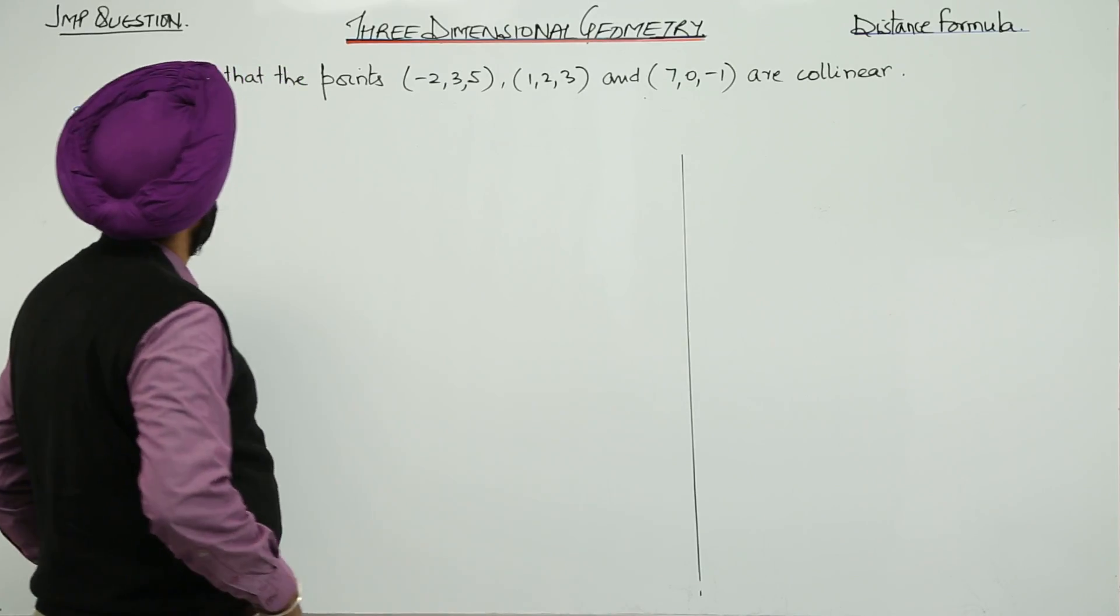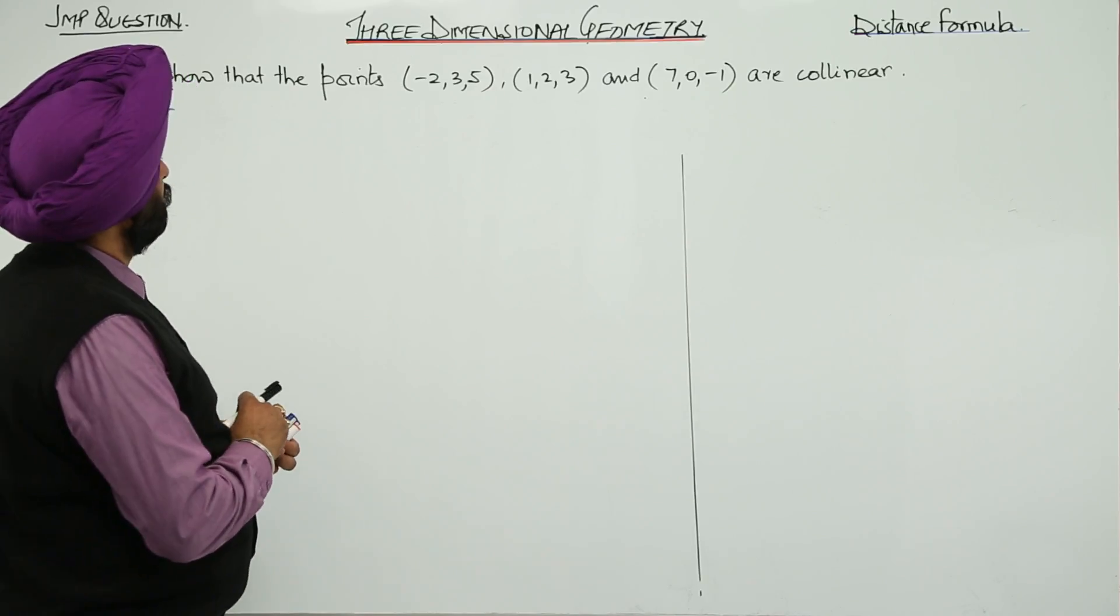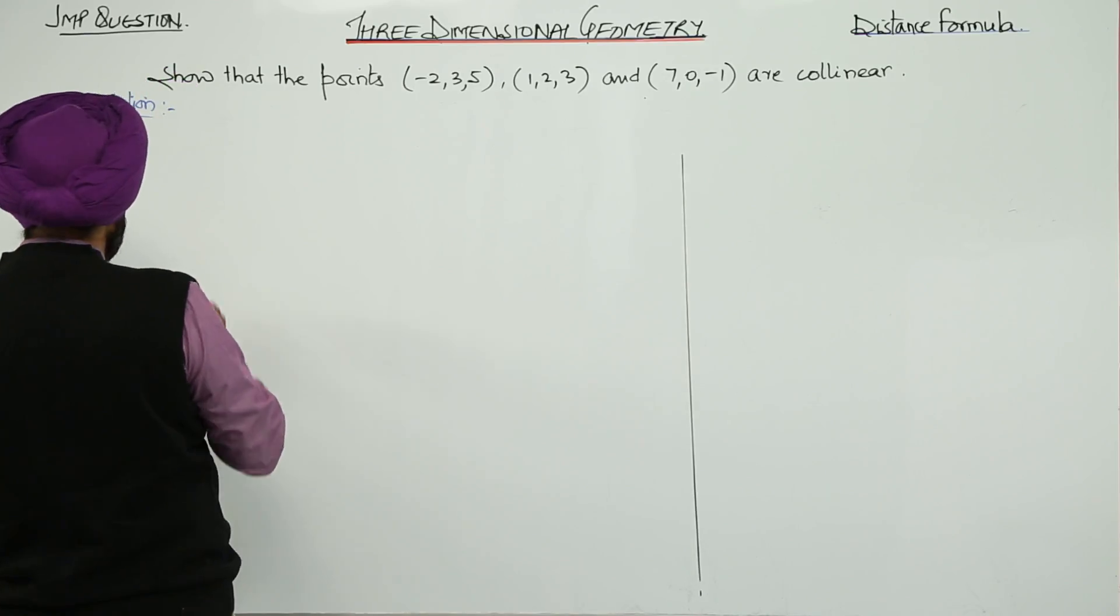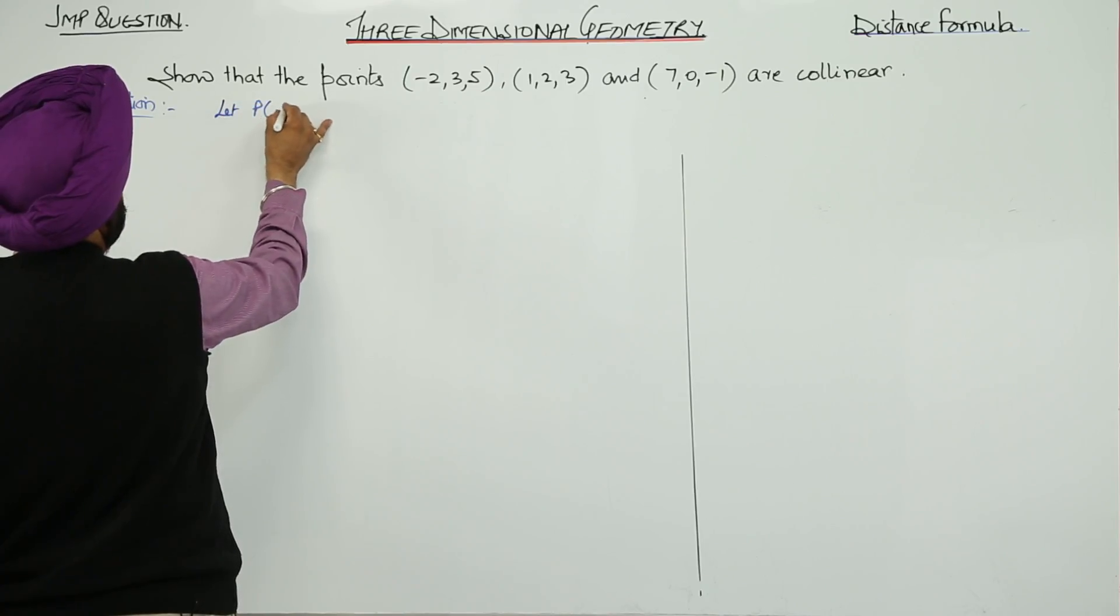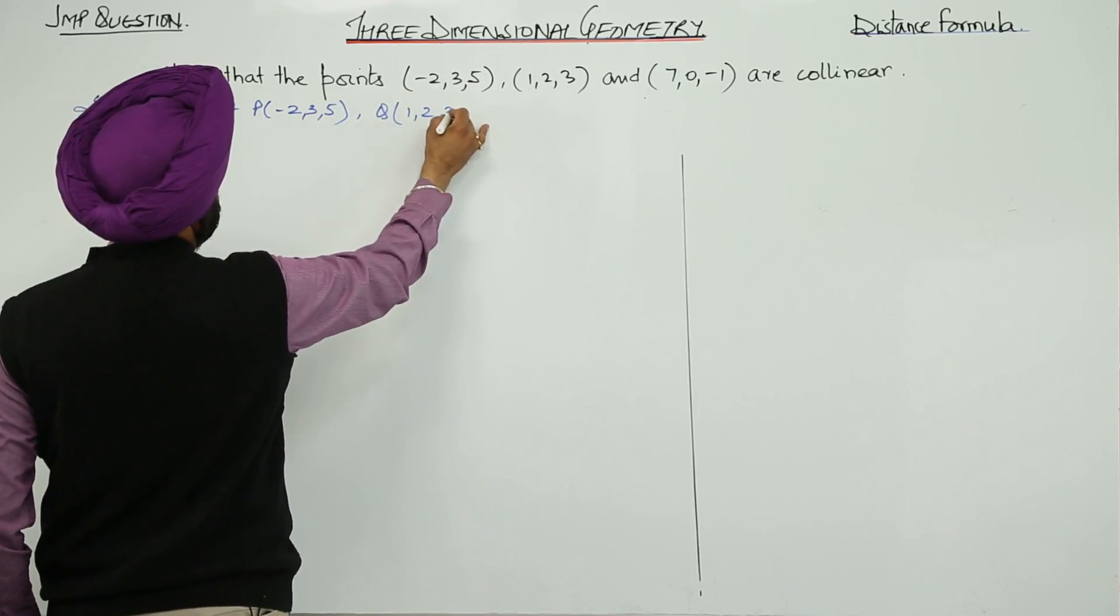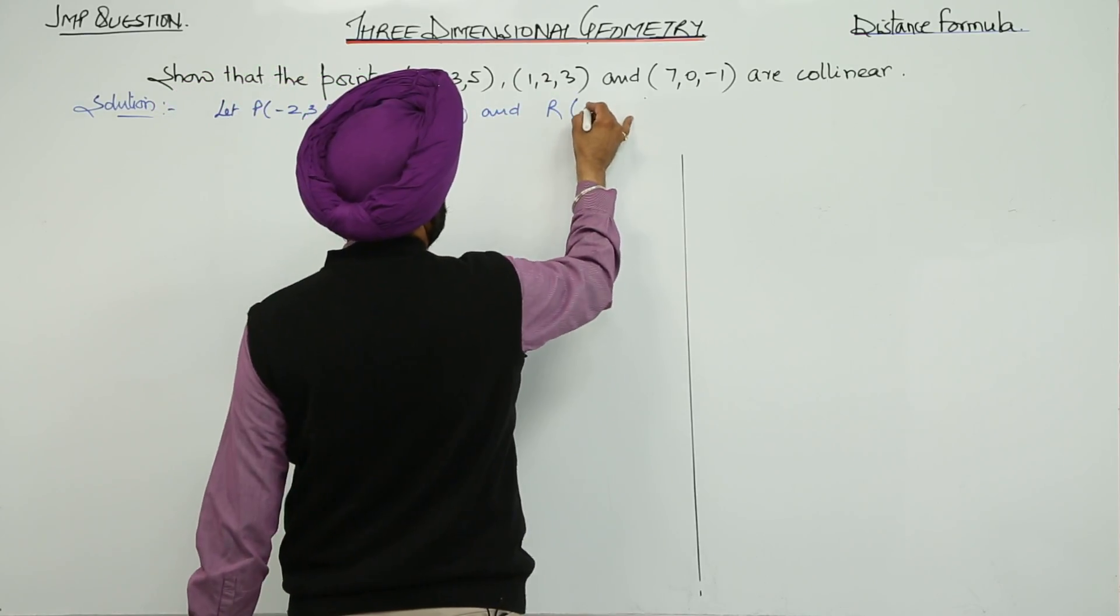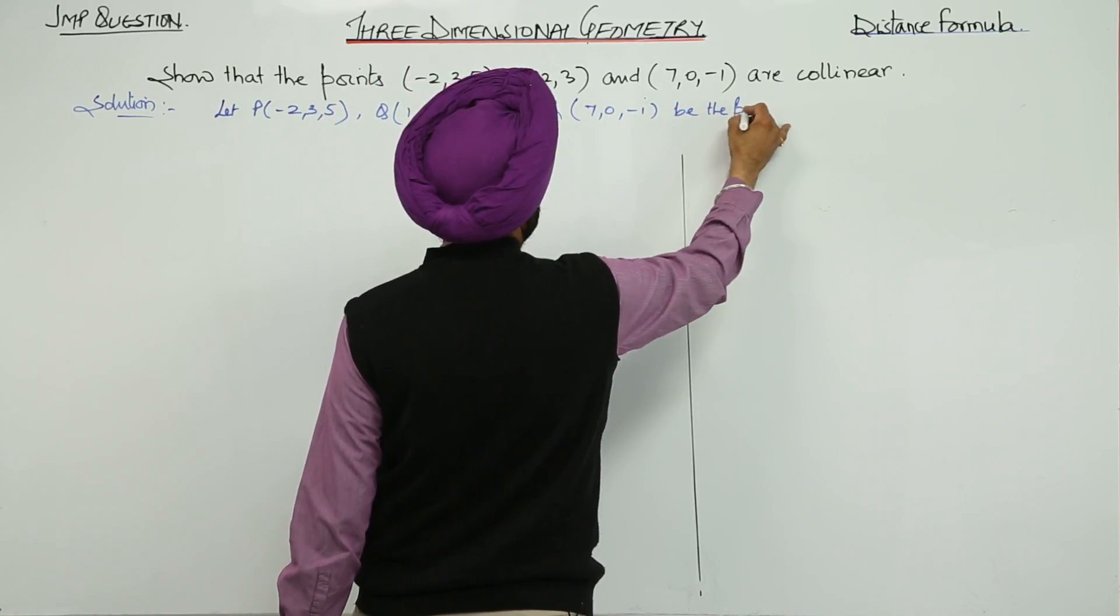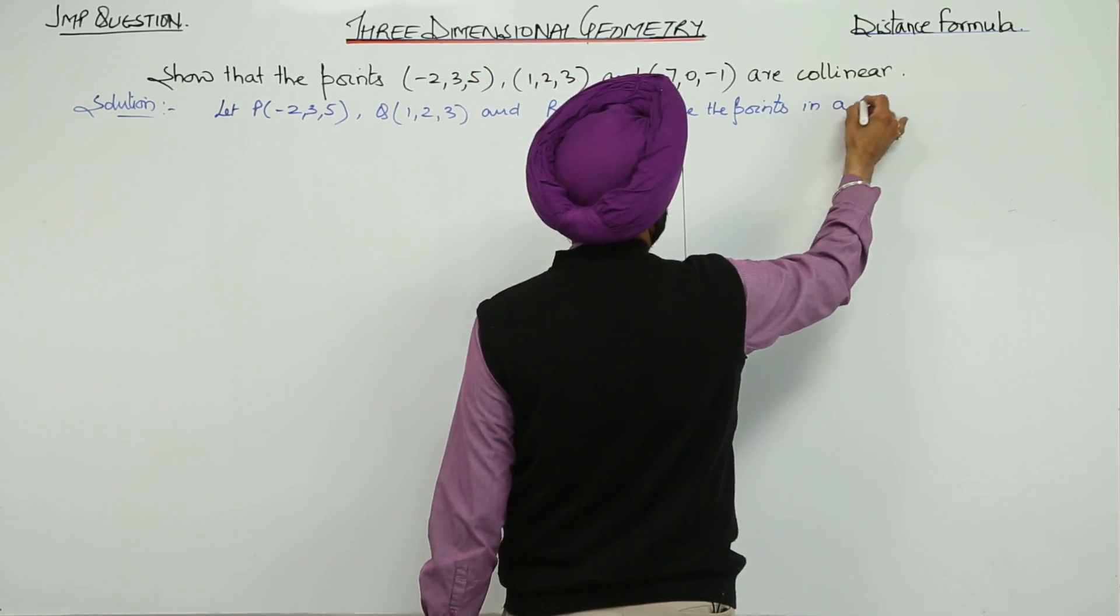In this question, coordinates for the three points are given to us and we have to show that these points are collinear. Let P(-2, 3, 5), Q(1, 2, 3), and R(7, 0, -1) be the points in a space.